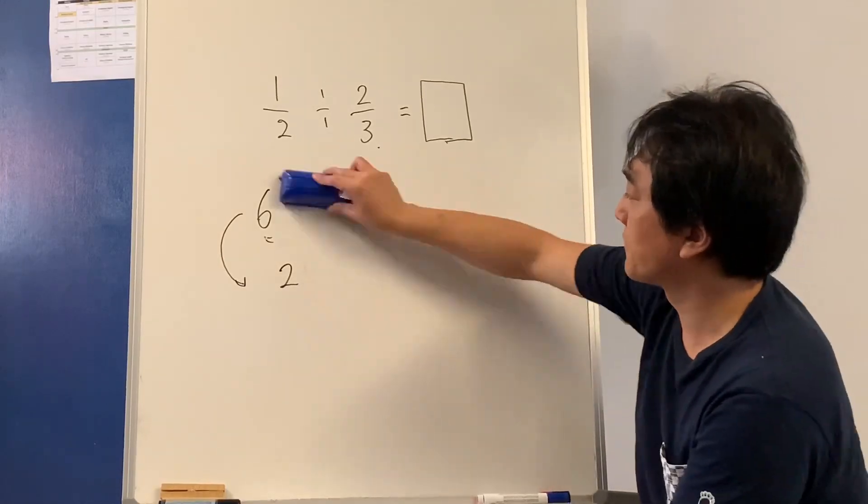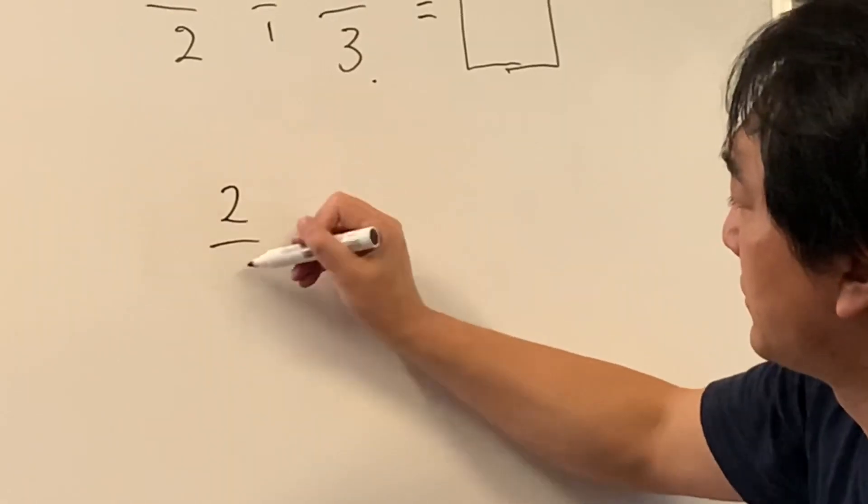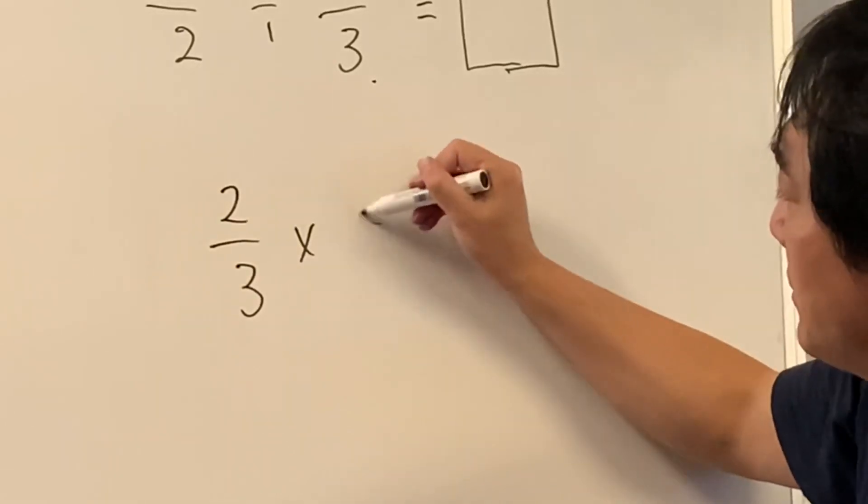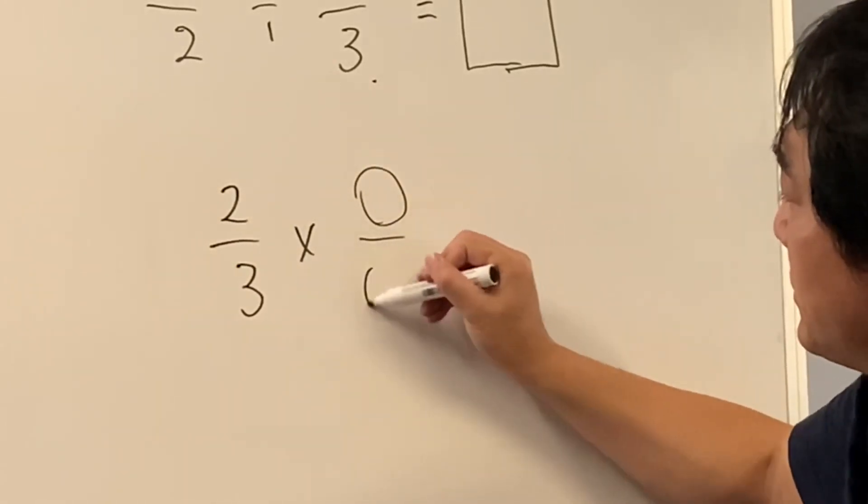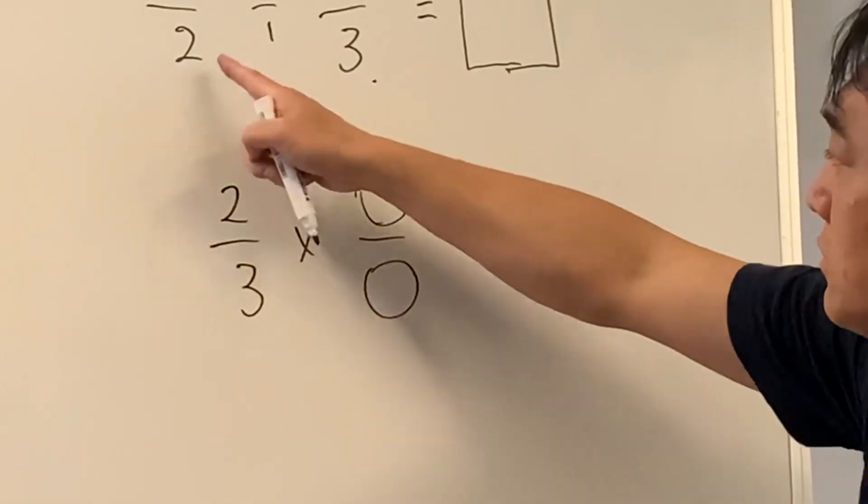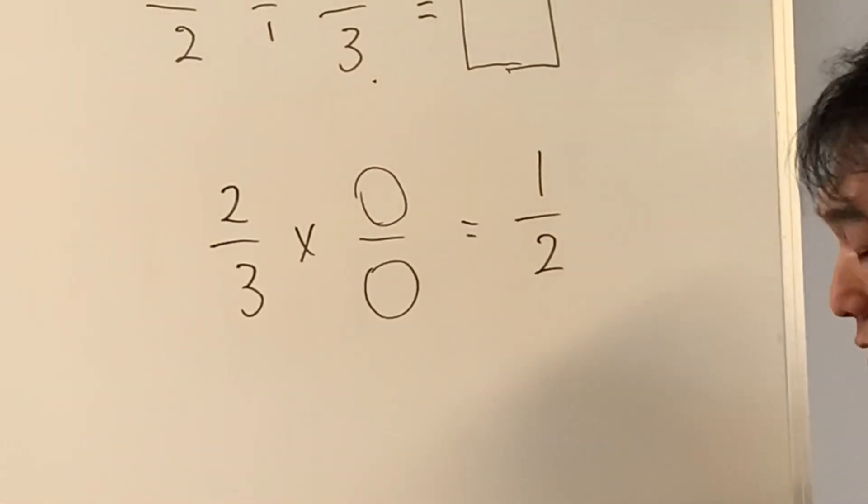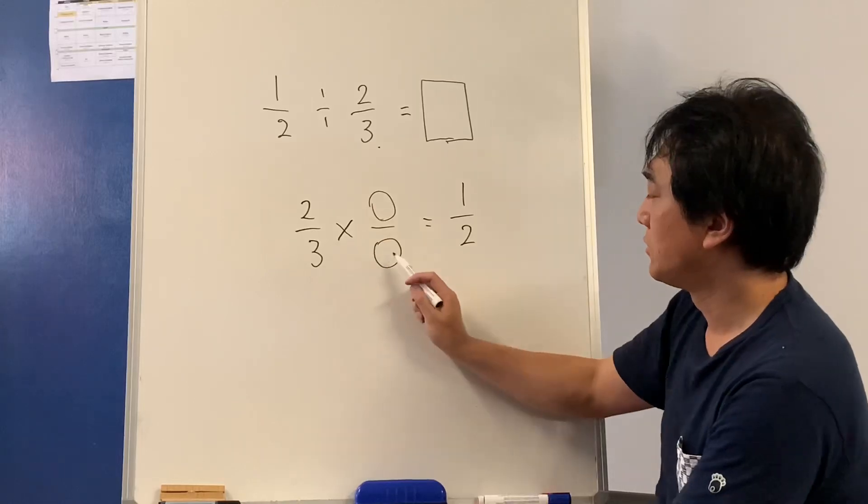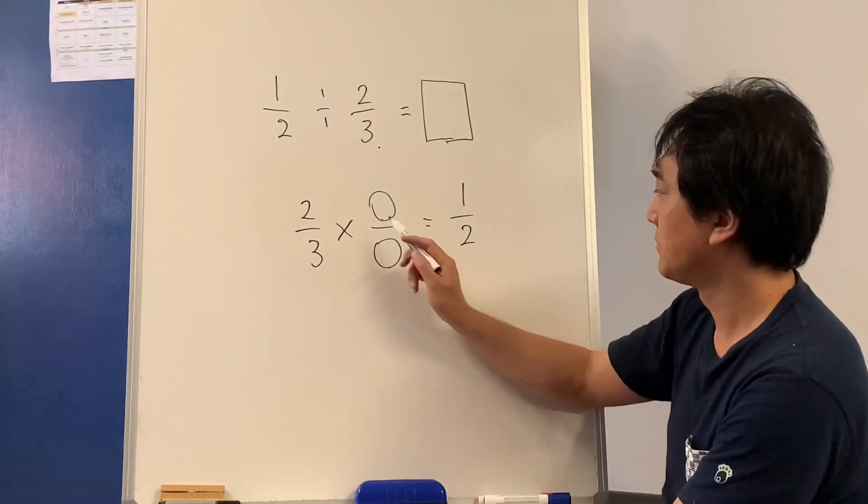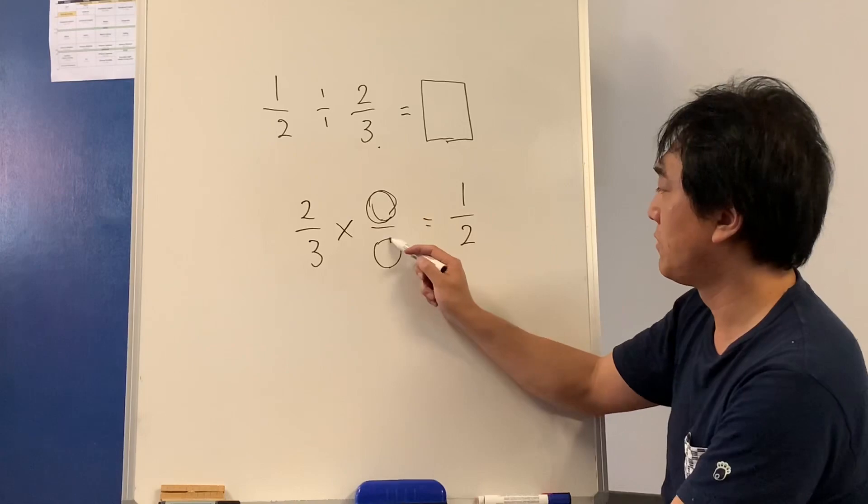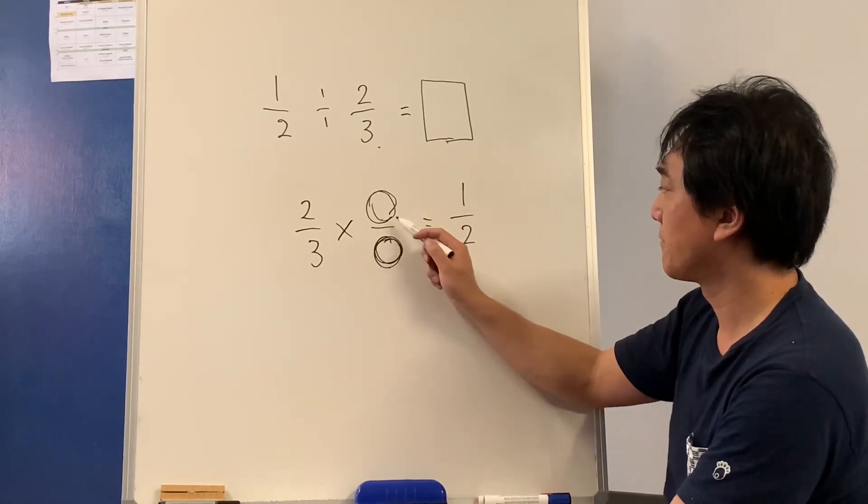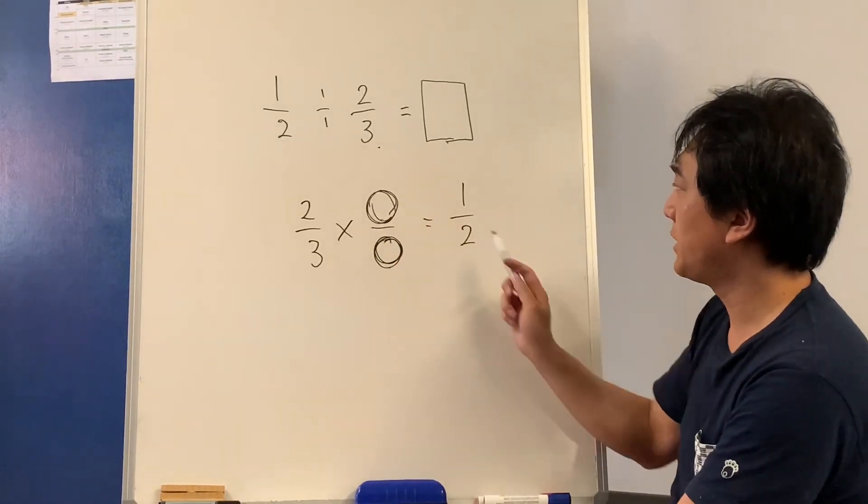So two thirds times these two numbers is going to be one half. Do you agree with that? So to find this, what would this be? So let's see.